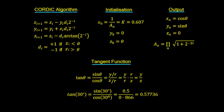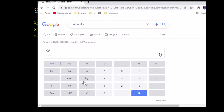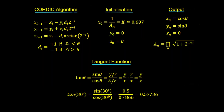We can compare this to the actual value — going into a calculator on degrees and entering tan of 30, it gives us 0.5735. So we are now able to work out six functions using our CORDIC method: the inverse sine, cosine and tangent, and also the sine, cosine and tangent.